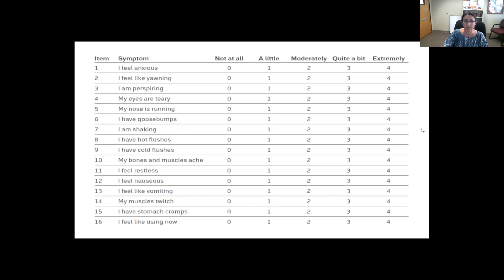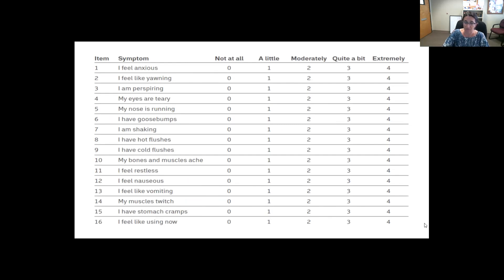Here's an example of the SOWS scale. Much like the COWS scale, patients can administer this at home, scoring themselves from zero to four on these subjective and objective findings of withdrawal. Based on this, you give them a goal — a target — of about 17.